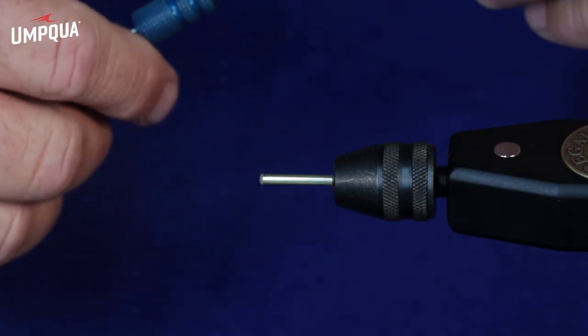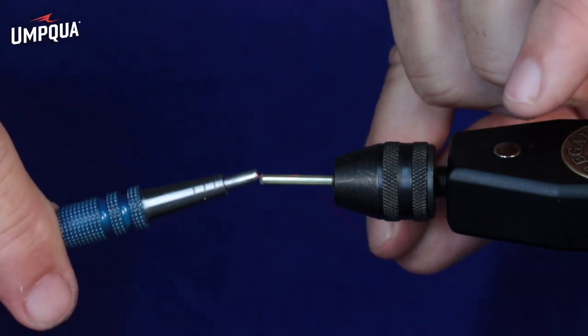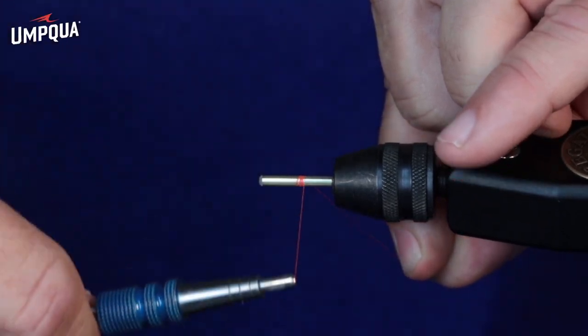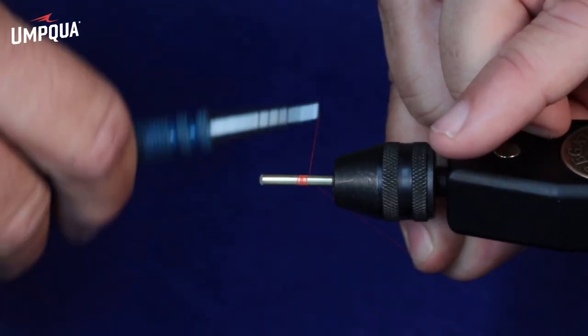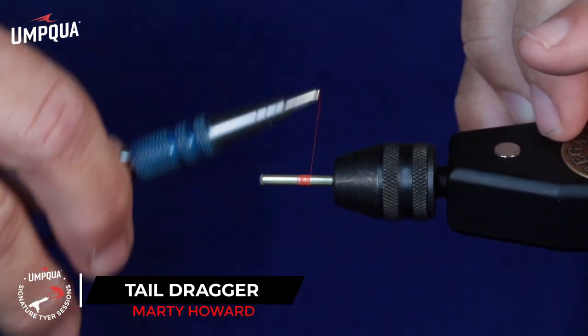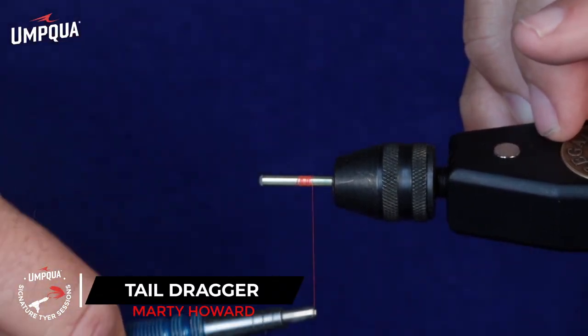And I'm ready to go to work with my fly. So I'm using orange thread. I normally use black thread for this fly, but I'm using orange so you can see the thread work a little bit easier.